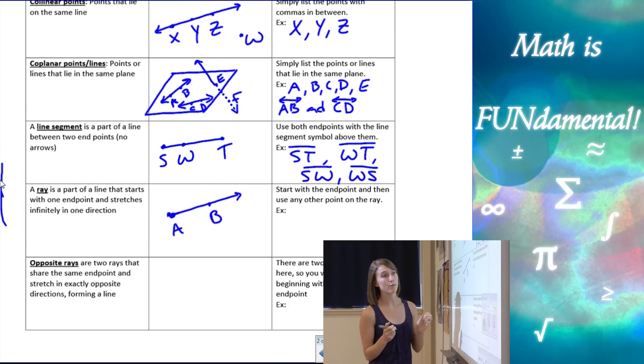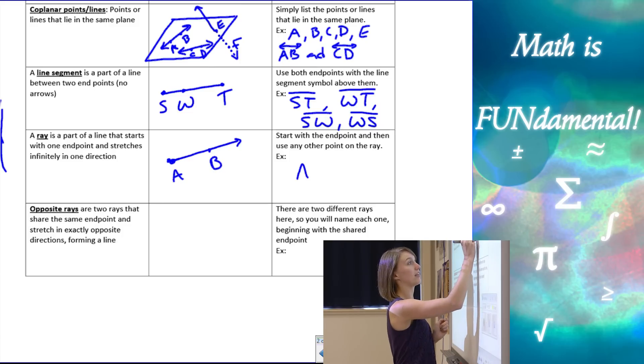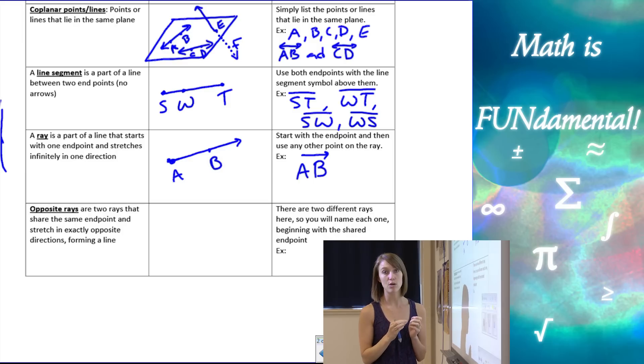But here with the ray we have to start with the end point, A, and then do the point that goes through with the arrow. Because our ray symbol is going to have one arrow, but it always points to the right. So we want to make sure that our end point starts our ray when we name it, and it goes through the other.